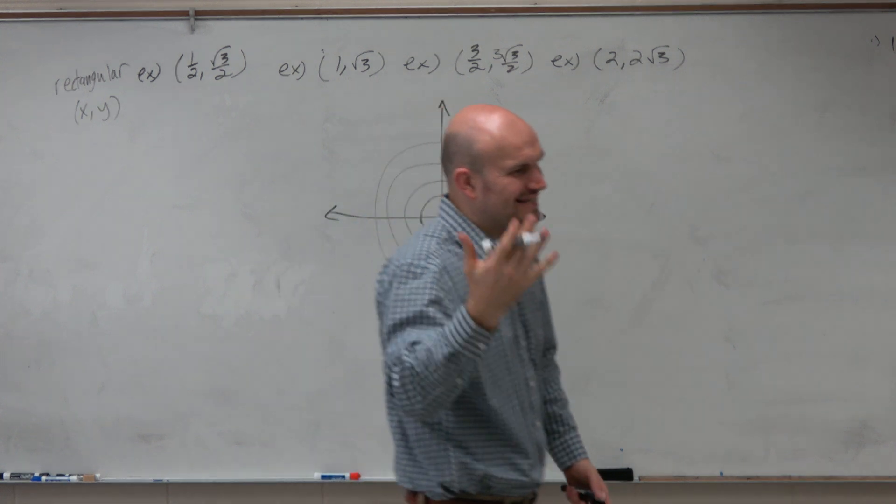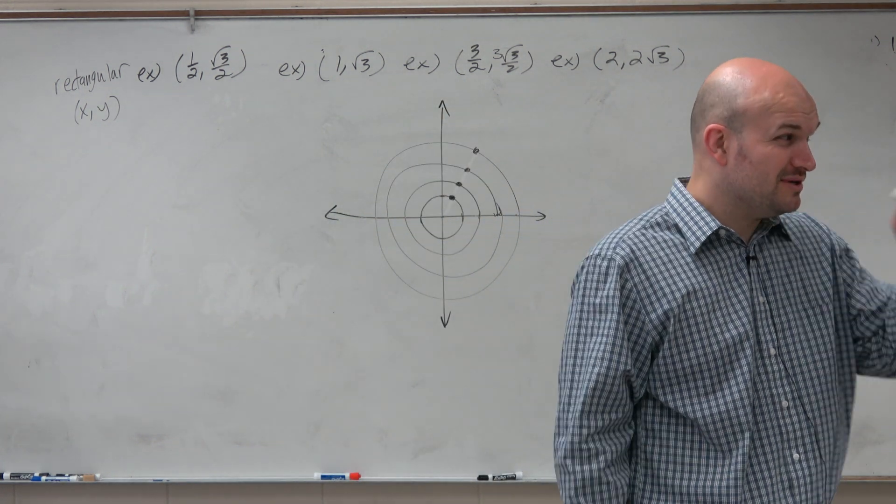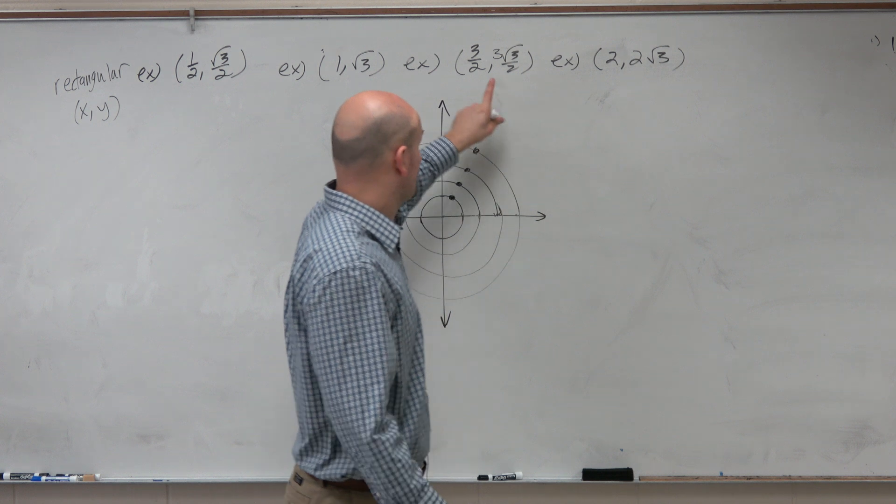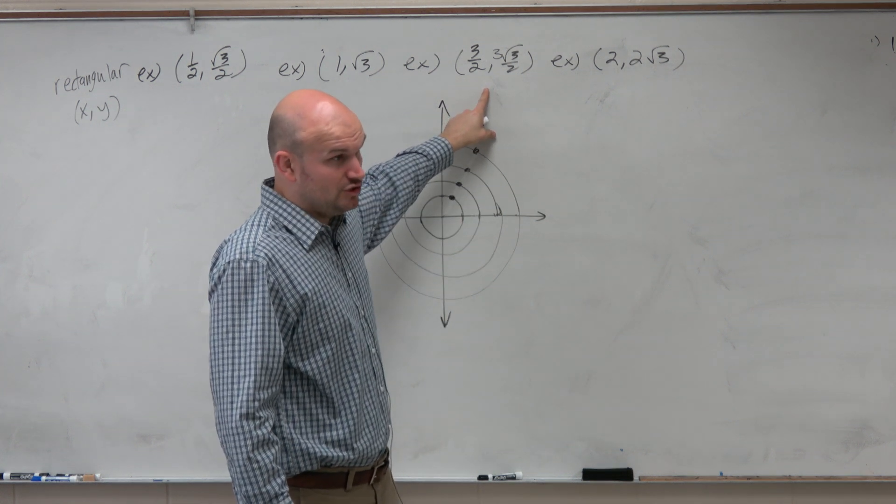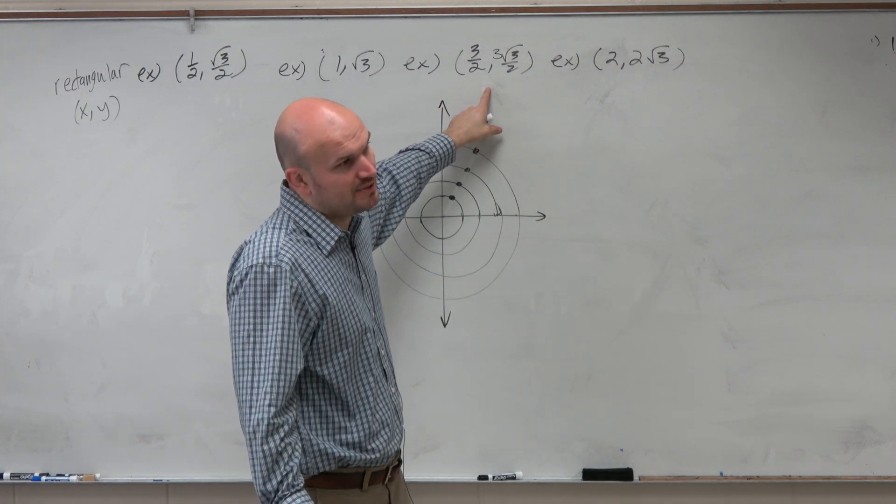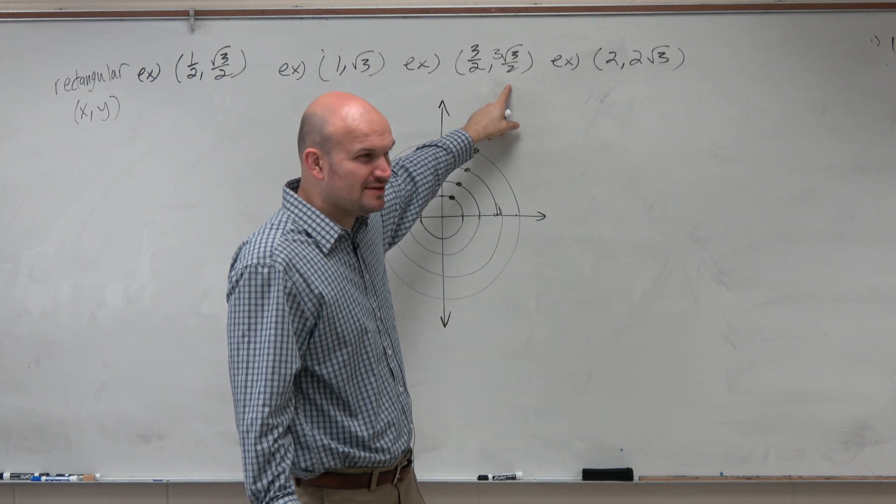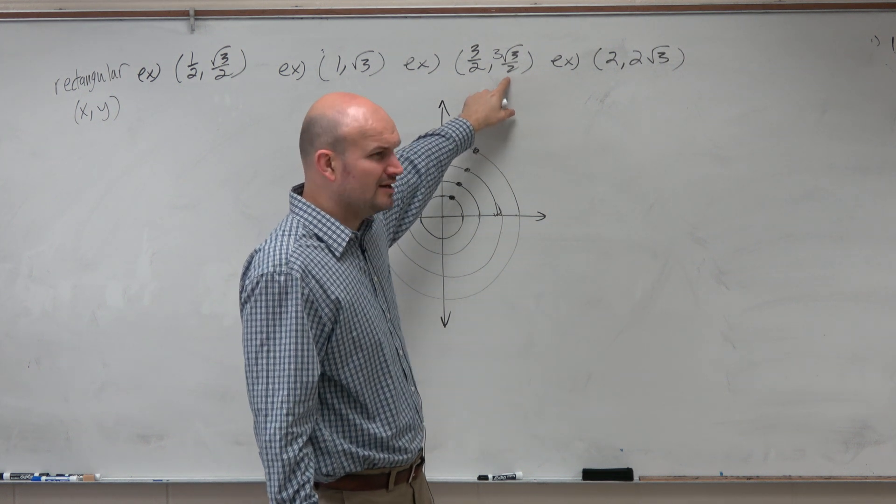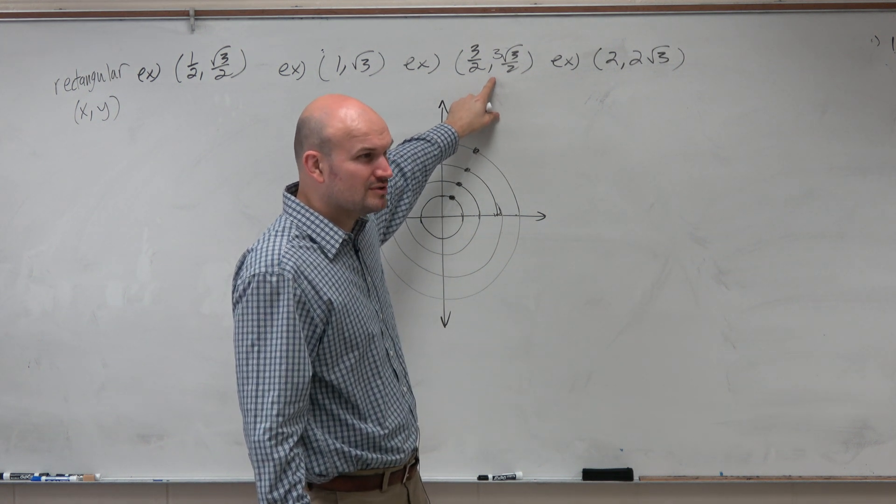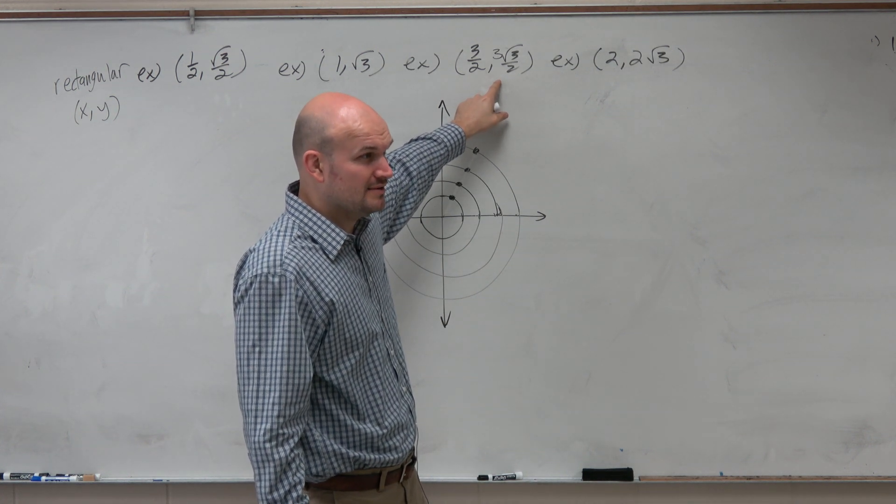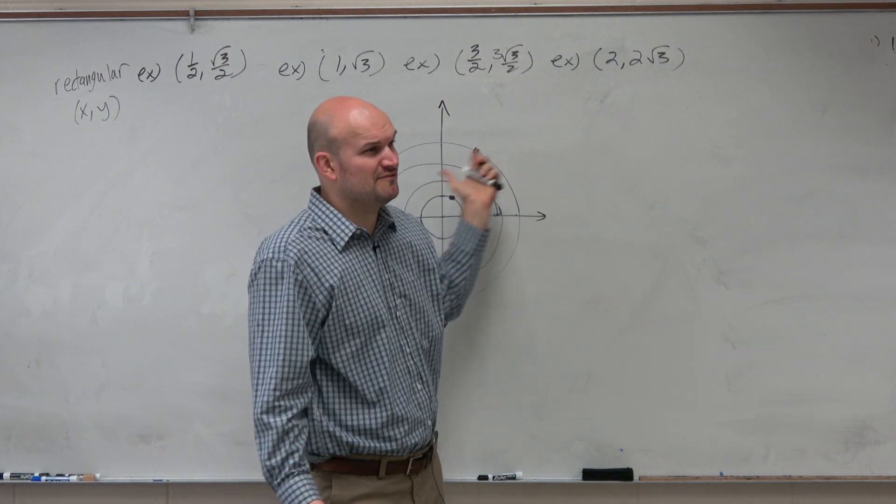However, is there an easier way to graph these? Because if you didn't know that first one, like if I just randomly said to you, graph this, you'd probably get a little close, but it would be kind of difficult. You'd have to think a little bit on where is that, what is that value? Especially if you didn't have a calculator. Would you guys agree?